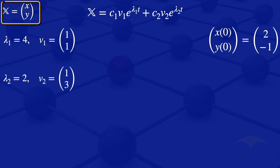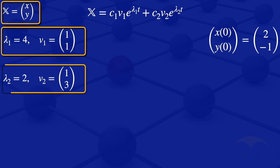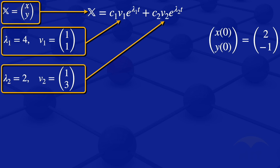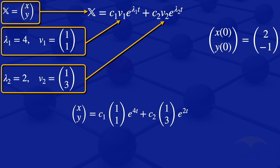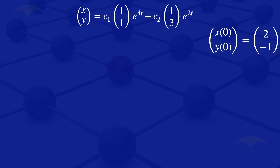So we substitute into the general solution: x and y equal C1 times [1; 1] times e^(4t) plus C2 times [1; 3] times e^(2t). That is the expression we have now.